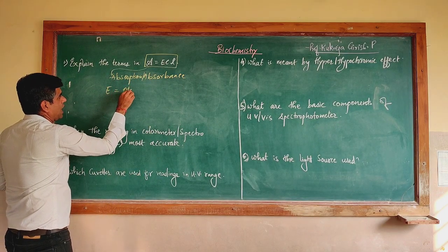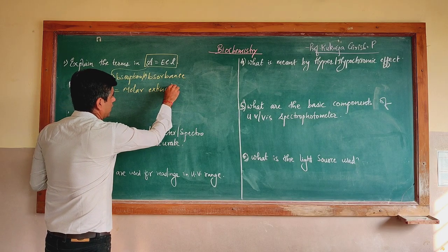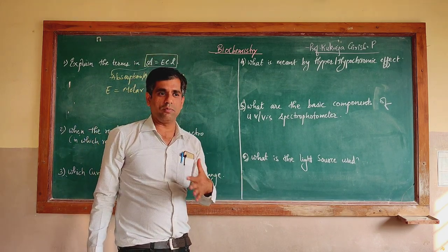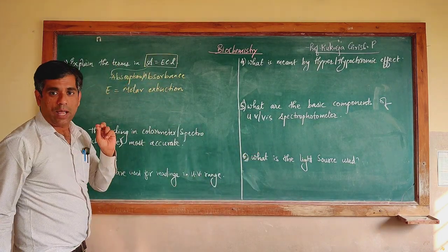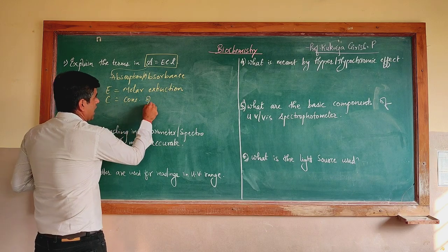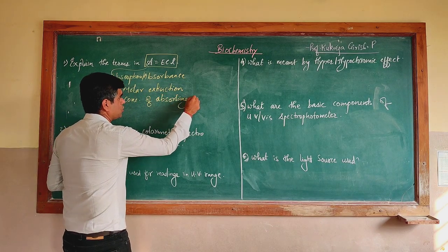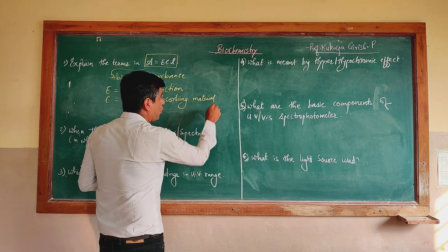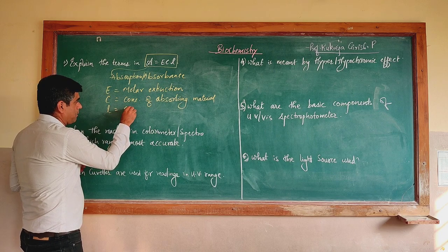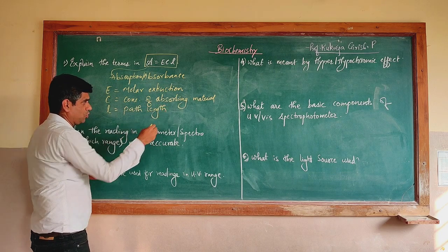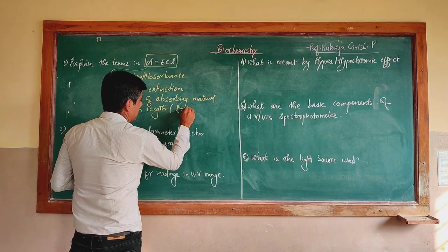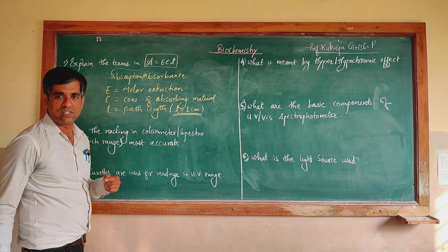Epsilon refers to the molar extinction coefficient — the molar extinction coefficient of the material absorbing the light at its wavelength. The units are 1/(mole × centimeter). C is the concentration of the absorbing material in molars. L is the path length — the length that the light travels through. In most standard spectrophotometers and colorimeters, L equals 1 centimeter.